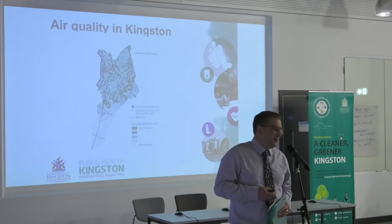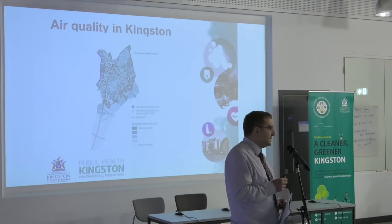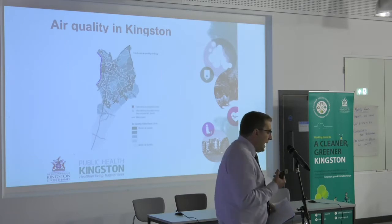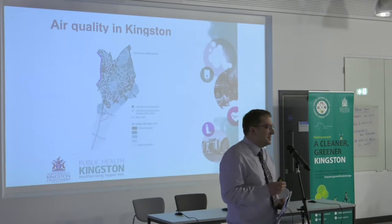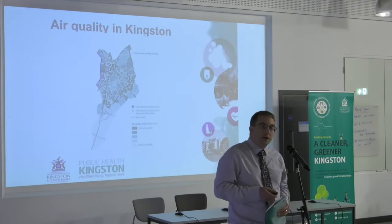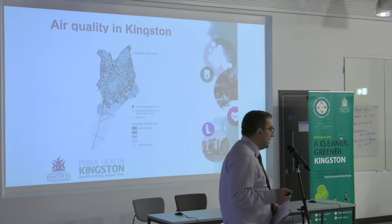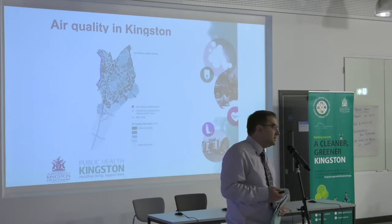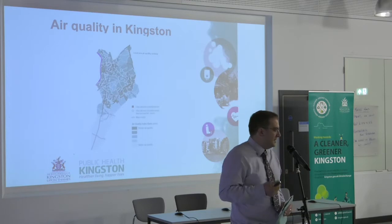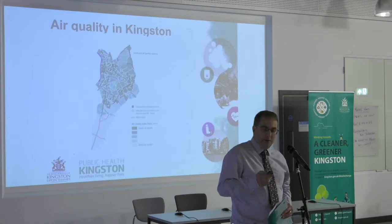Looking at maps like the one Peter showed earlier, you can see that the areas of worst air quality are around our major roads. In Kingston, there's about a six-year difference in life expectancy between the most deprived area and the least deprived area. We know that houses along busier roads are cheaper, so you're more likely to live there if you're economically disadvantaged. This is another reason why air quality is a public health priority — it's a contributor to that health inequality gap.